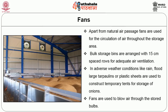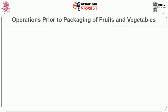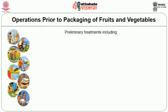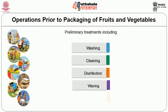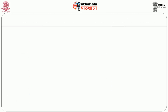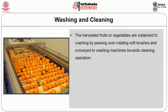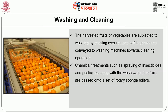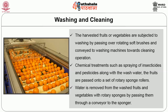Let us discuss about the operations prior to packaging of fruits and vegetables. Many preliminary treatments including washing, cleaning, disinfection, waxing and finally packaging are given to fruits and vegetables to improve appearance and maintain quality. The first step is washing and cleaning, where the harvested fruits or vegetables are subjected to washing by passing over rotating soft brushes and conveyed to washing machines. Chemical treatments such as spraying of insecticides and pesticides along with the wash water are applied, and fruits are passed onto a set of rotary sponge rollers. Water is removed from the washed fruits and vegetables with rotary sponges by passing them through a conveyor to the sponger.